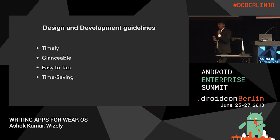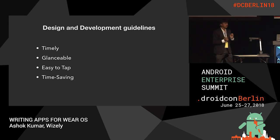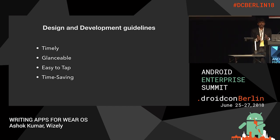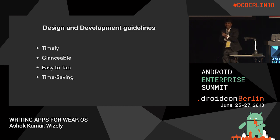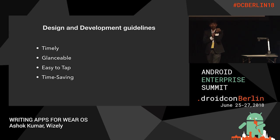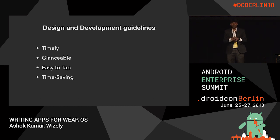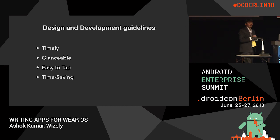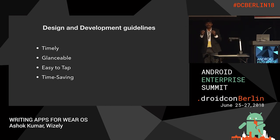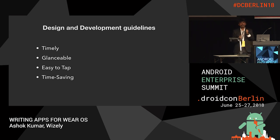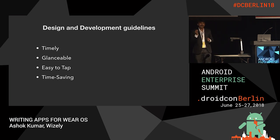There are a couple of good practices — design and development guidelines. Our Wear OS apps should be timely. The information displayed on the 1.5-inch Wear screen should be timely and should not involve a lot of asynchronous calls. We should make sure the user interface is glanceable, easy to tap, and time-saving, because users don't have the time.